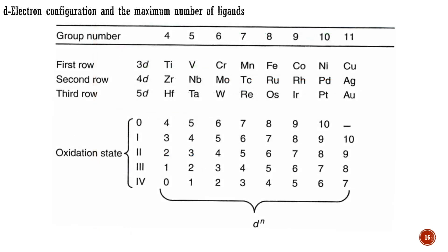The d-electron count is critical to understanding transition metal organometallic chemistry because of the 18-electron rule, which states: in mononuclear, diamagnetic complexes, the sum of the metal d-electrons plus those contributed by the ligands never exceeds 18. The 18-electron rule determines the maximum allowable number of ligands for any transition metal in any oxidation state.